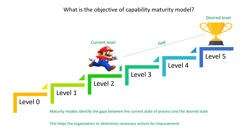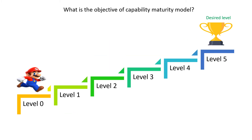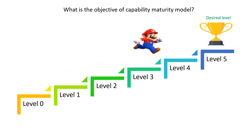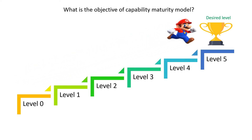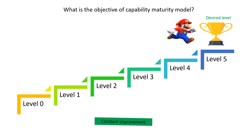This helps the organization to determine the necessary actions for improvement. The main objective of the Capability Maturity Model is continuous improvement — you move from level 0 to level 1, 2, 3, and finally to the desired level where your target is achieved.